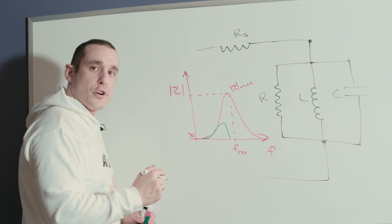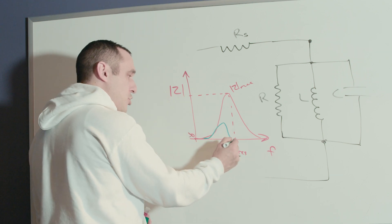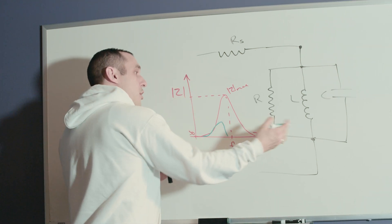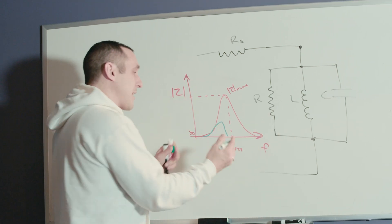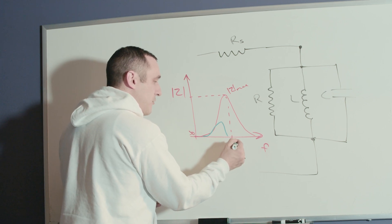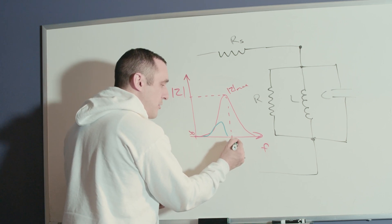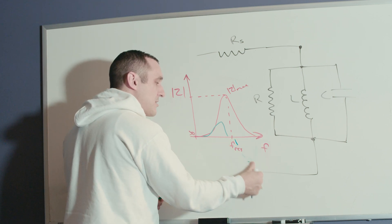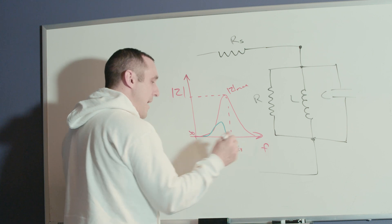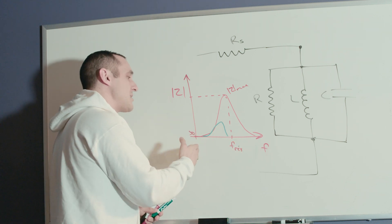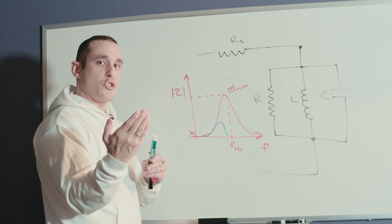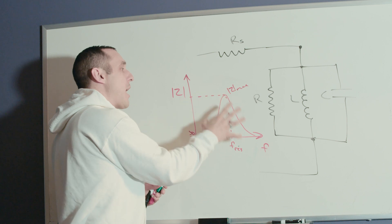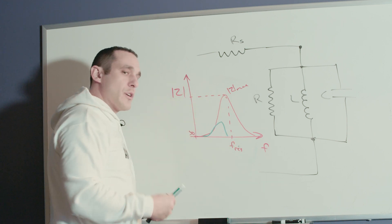Some ferrite bead datasheets will also show a reactance curve, which generally looks something like this, and then drops down to zero at the resonant frequency. If you know something about RLC circuits, the reactance curve will actually go negative above the resonant frequency — but that's generally omitted from ferrite bead datasheets. Typically, the frequency range we really care about is everything from DC up to resonance. Generally we're trying to pass a signal below the peak of this curve, and then we want to filter out any high-frequency noise above that bandwidth.